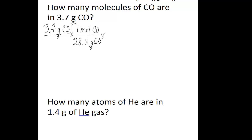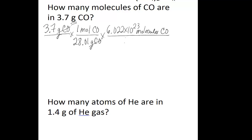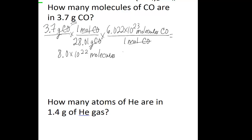The molar mass is 1 mole of carbon monoxide per 28.01 grams of carbon monoxide. You can cancel out the grams of carbon monoxide, and now you can use Avogadro's number to get from moles to molecules: 6.022 times 10 to the 23rd molecules of carbon monoxide in one mole of carbon monoxide. The moles cancel out, and when you do the math, you get 8.0 times 10 to the 22 molecules of carbon monoxide.